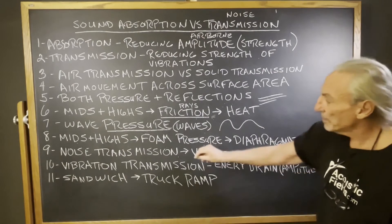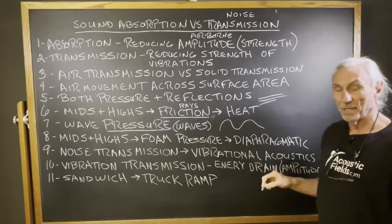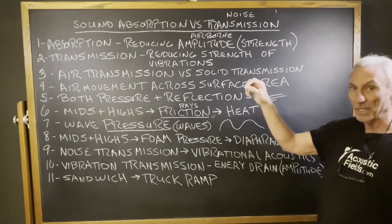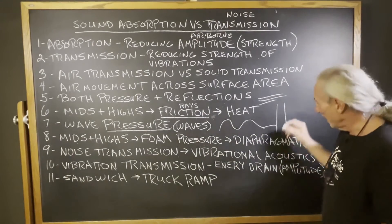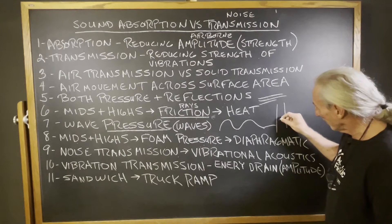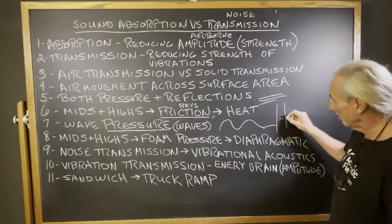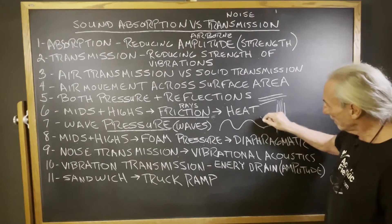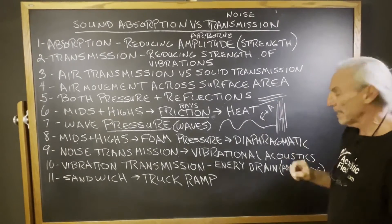Noise transmission is vibrational acoustics. That's where all of this airborne energy strikes a wall surface and becomes vibrational. So it goes from what we call a snake to a worm. The goal of any barrier is to have a series of layers that are frequency and amplitude dependent on the noise that's striking it.